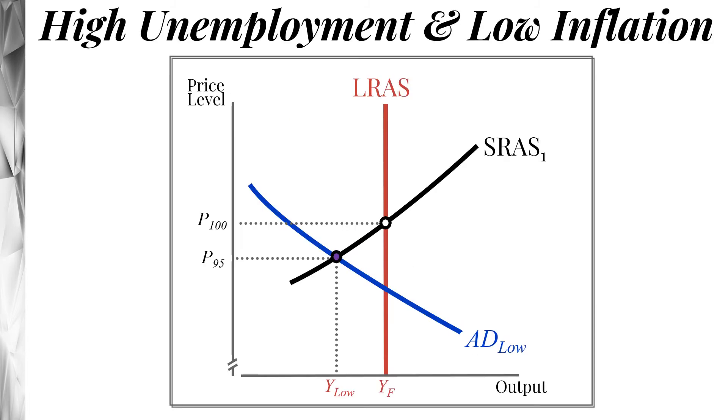If aggregate demand is low, if we move aggregate demand back, what do you have? Well, you have low inflation, but high unemployment. So in this graph here, we can see that when we move from the original kind of equilibrium point on the long run aggregate supply curve, and we move aggregate demand lower, what ends up happening is we get to this lower price level, price level at 95 and the lower output equilibrium, which is going to represent kind of high unemployment here.